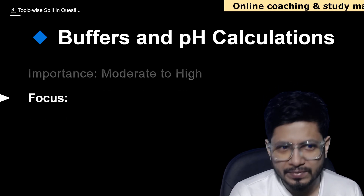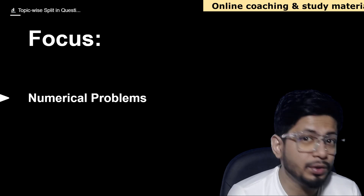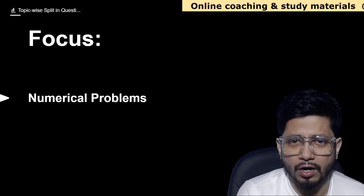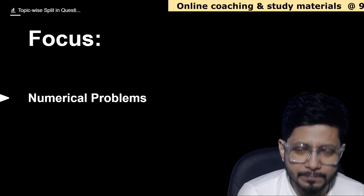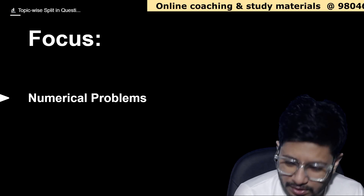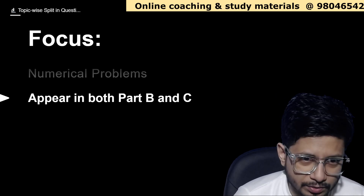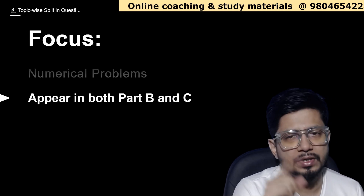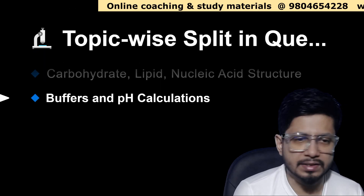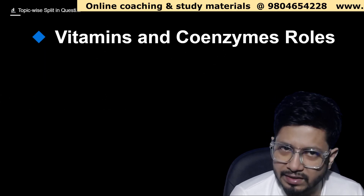Next is buffers and pH calculation questions. The importance level is moderate to high. The focus for buffer questions is on numerical problems to calculate the net pH of a solution, as well as the net charge of amino acids. Amino acid titration questions appear in both Part B and Part C.